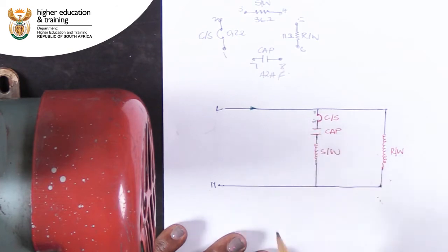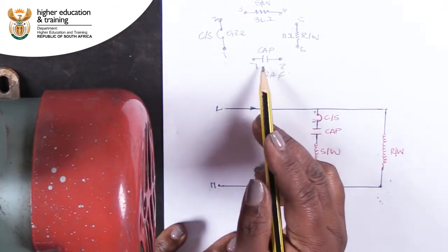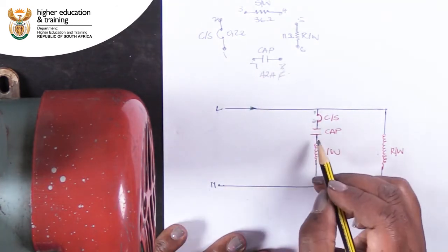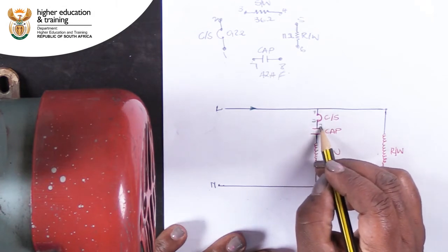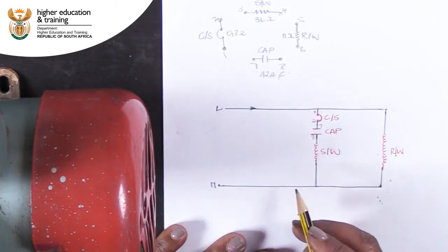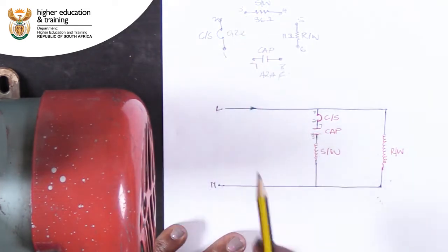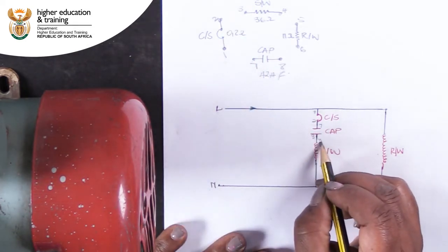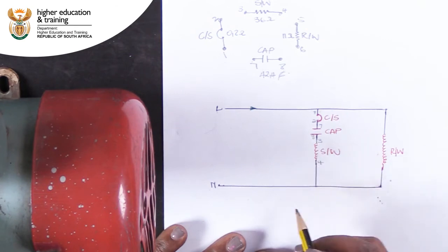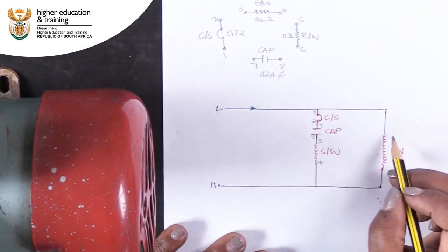The capacitor is between points 7 and 8. Fill these posts in. The start winding is between points 3 and 4, and the run winding is between points 5 and 6.